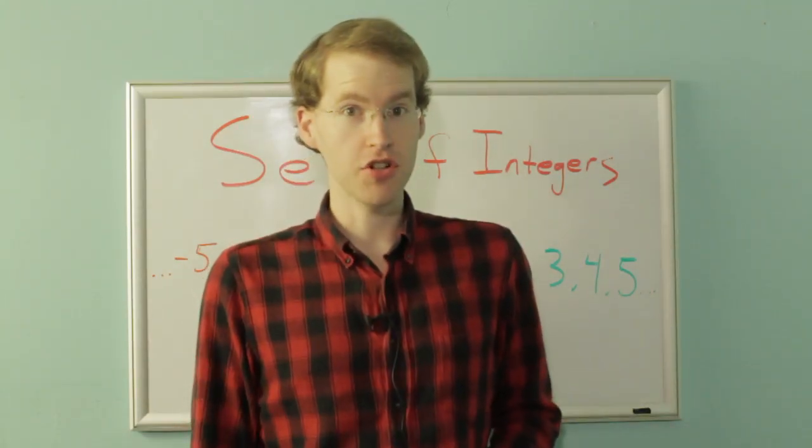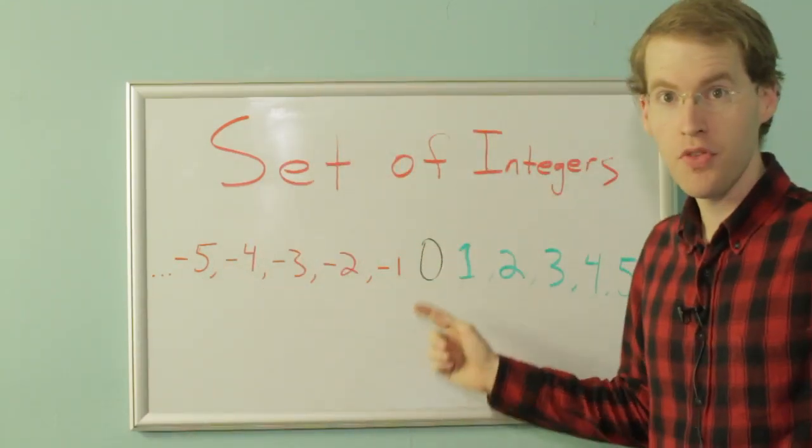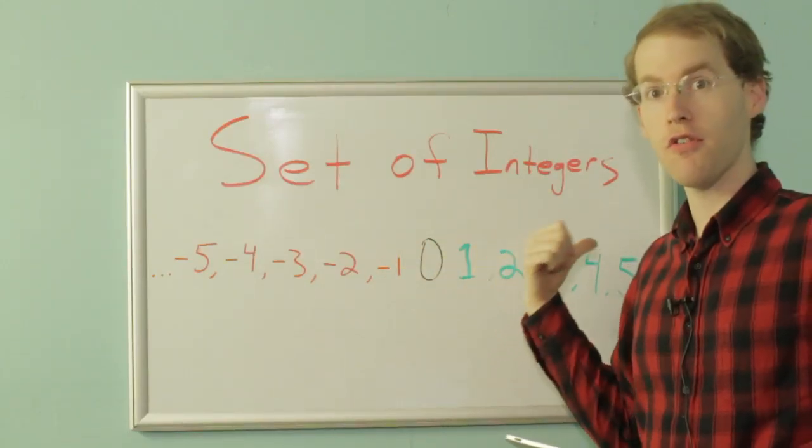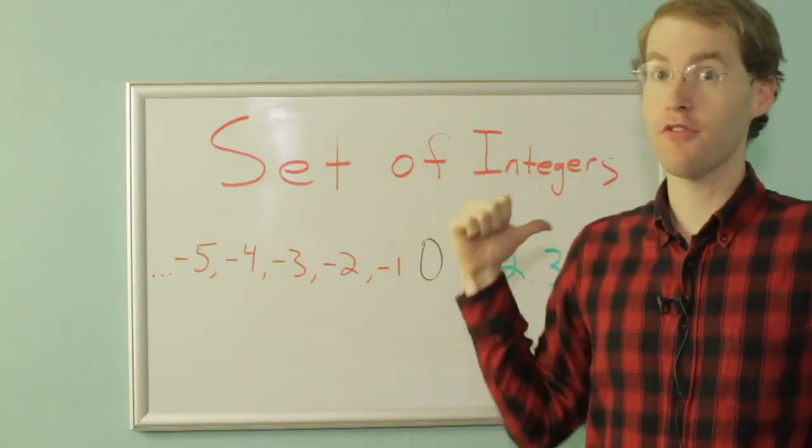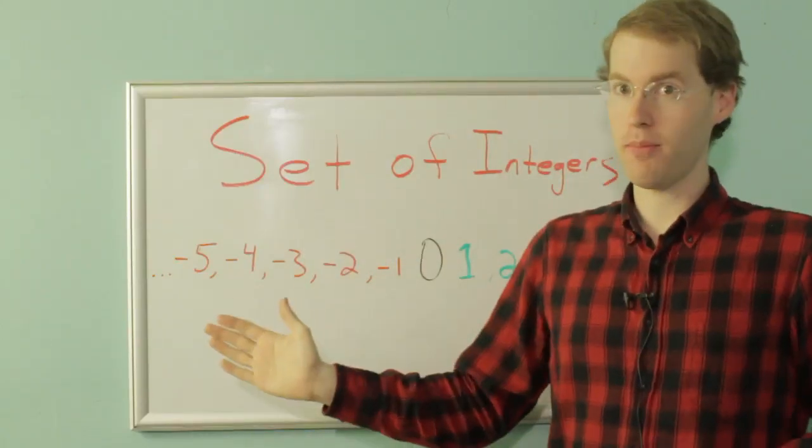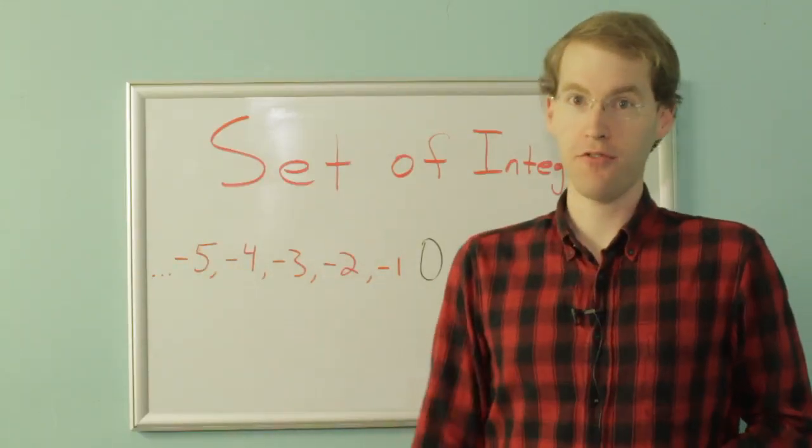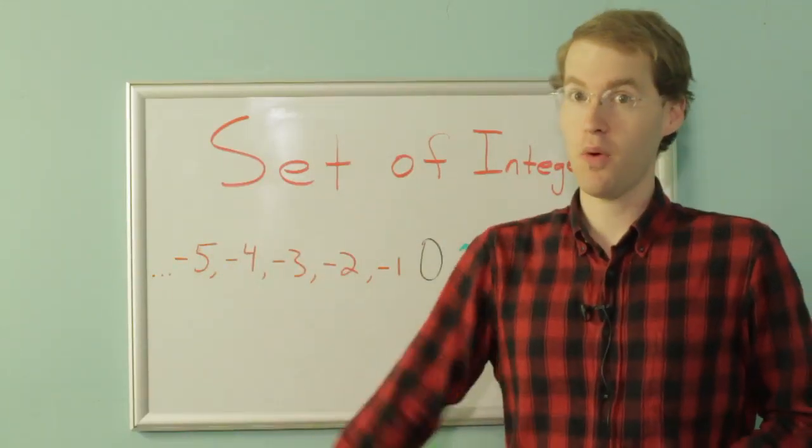The set of integers includes 0, all the positive whole numbers like 1, 2, 3, 4, 5, and counting upwards forever, and all the negative whole numbers. Negative 1, negative 2, and counting down all the way forever. As high or as low as you want to go.